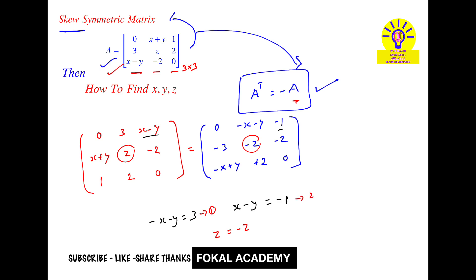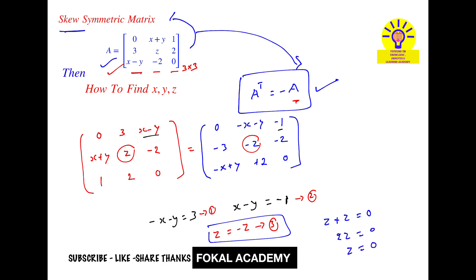These three conditions are helpful. Consider equation 3: z equal to minus z. Simplifying gives z plus z equal to 0, so 2z equal to 0, therefore z equal to 0. Now we have the z value.